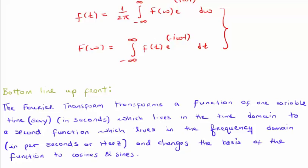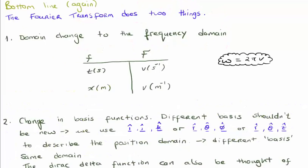Also the Fourier transform changes the basis of your function to one of cosines and sines. Another way of looking at it is that the Fourier transform does two things. It gives you a domain change to the frequency domain. So where your input function was one of time, your output function would be one of frequency measured in per seconds. If your input function is one of meters, your output function would be one of per meter or spatial frequency.